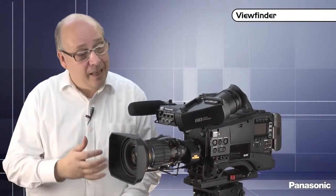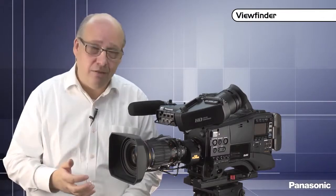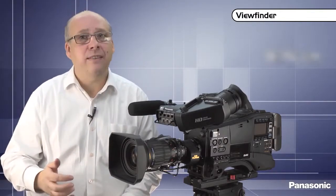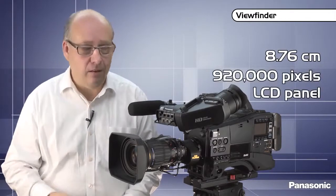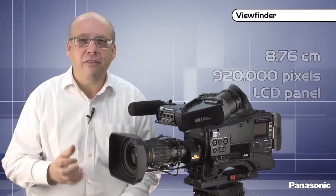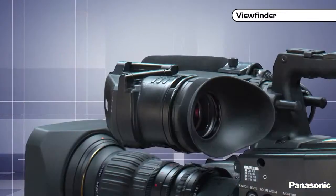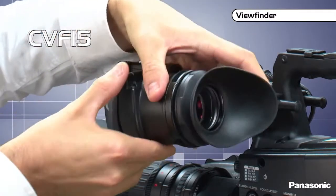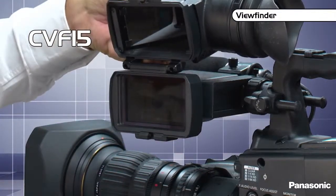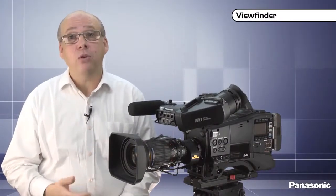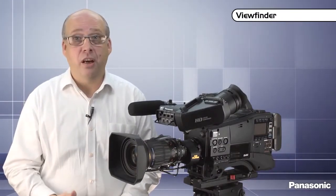The viewfinder of the HPX600 is both an LCD screen and a viewfinder. It has an 8.76 cm LCD panel with 920,000 pixels and a very fast refresh rate. Two models are available, the CVF-10 with one pivot point and the CVF-15 with two. The CVF-15 also comes with auto-flip picture, switch guard, etc.